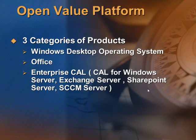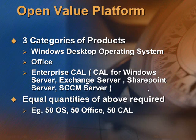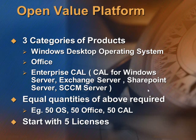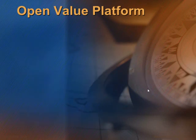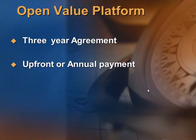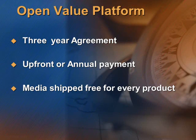Now let's look at Open Value Platform. This is similar to Open Value Enterprise except that it is a company-wide license. So if you have 50 PCs, you need to purchase 50 Windows operating systems, 50 copies of MS Office, and 50 Enterprise CALs. The pricing of Platform is lower than Open Value Enterprise. And again you can start off with only 5 licenses. Like Enterprise, this also has a three-year agreement and you get free media for each product. The rest of the terms are similar to Open Value Enterprise.